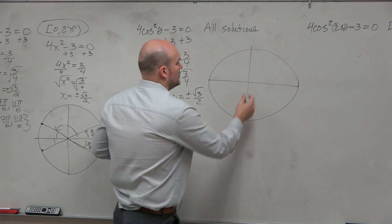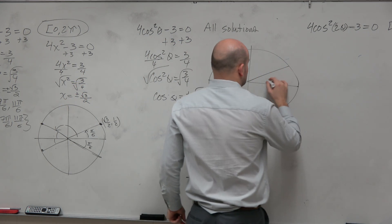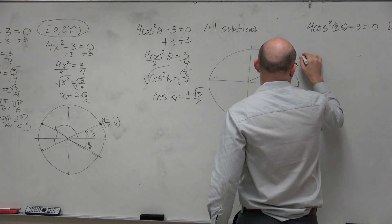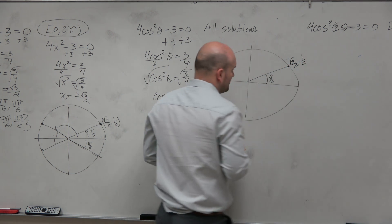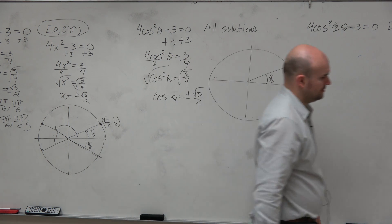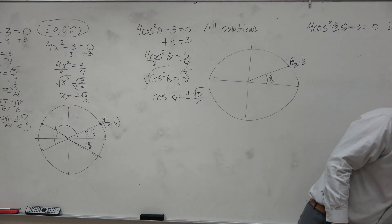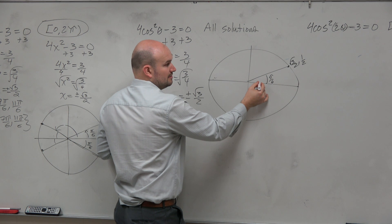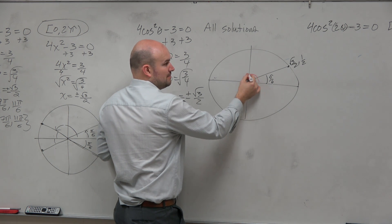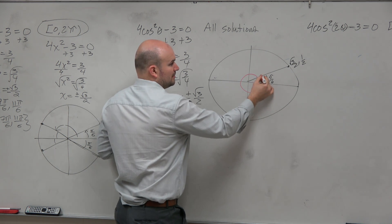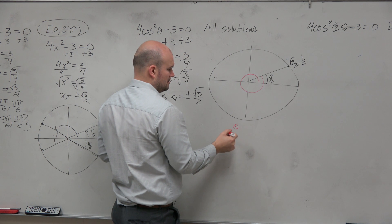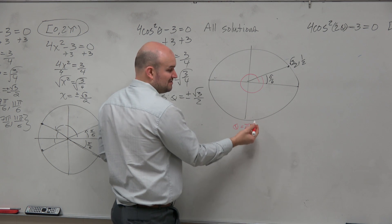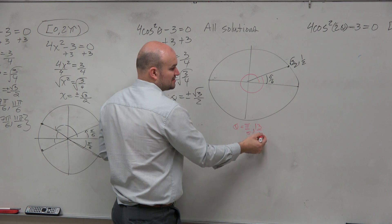We could also do negative angles. So if we know that at π/6, I have square root of 3 over 2, one half. Here's π/6. If I add 2π, what angle is that? π/6 plus 2π, which would be 12π/6, which is 13π/6.